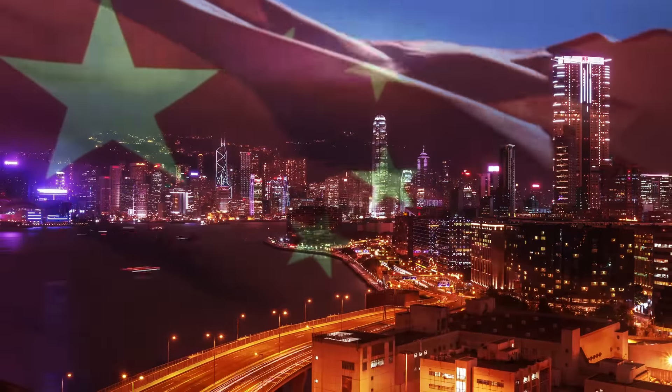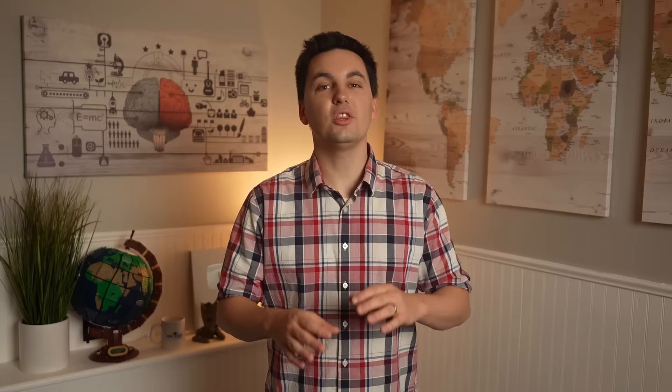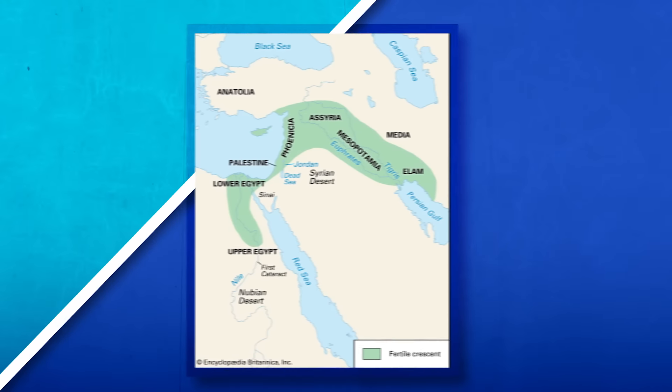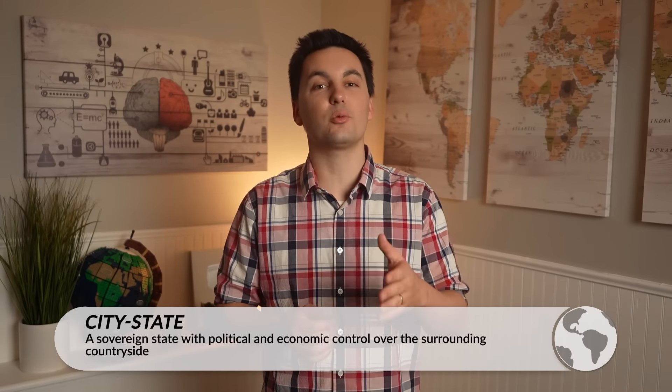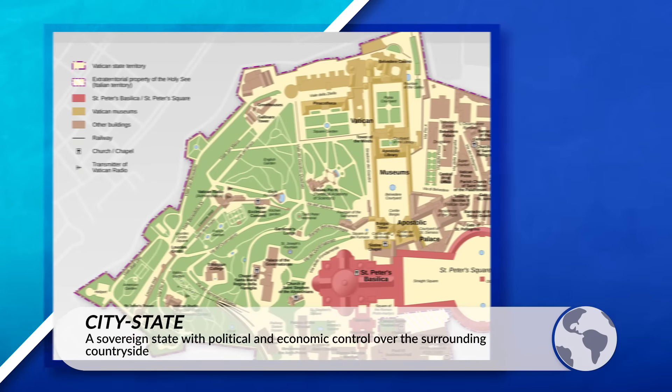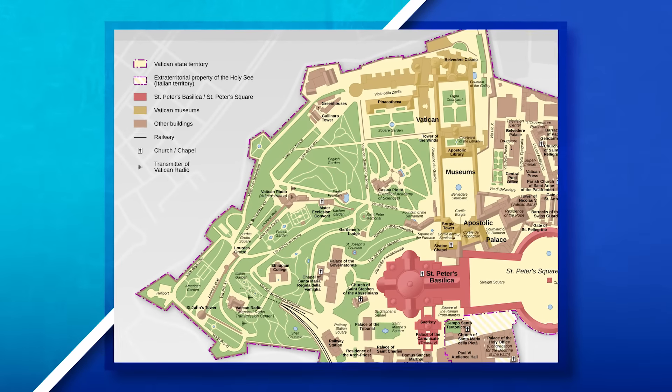This is the big difference between semi-autonomous regions and autonomous regions — it's all about control and power. Semi-autonomous regions have less control over their own policies. An example of a semi-autonomous region would be China and Hong Kong. One last political organization I want to highlight is the concept of a city-state. These states date back all the way to the Fertile Crescent. A city-state is a sovereign state with political and economic control over the surrounding countryside. Today, we still have city-states that exist, such as Vatican City.